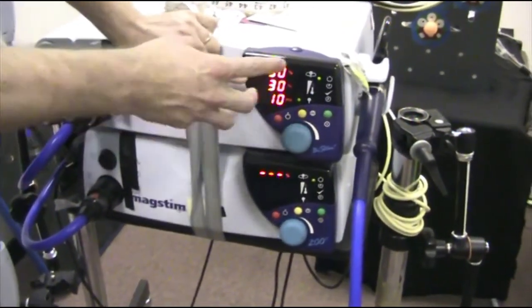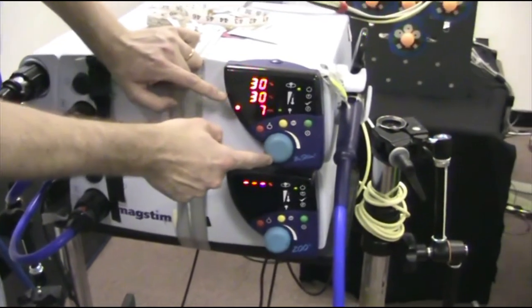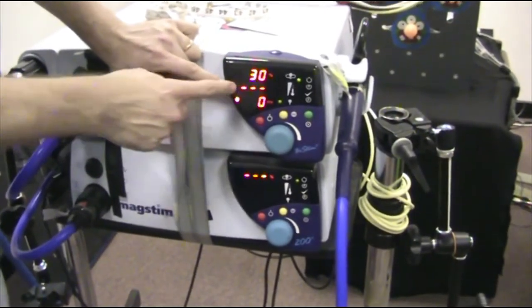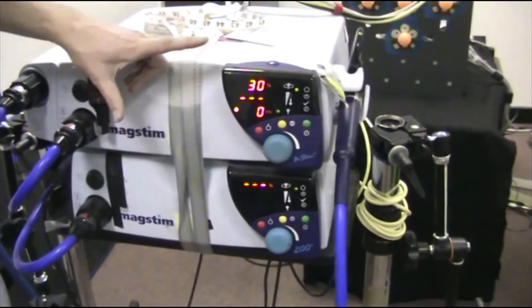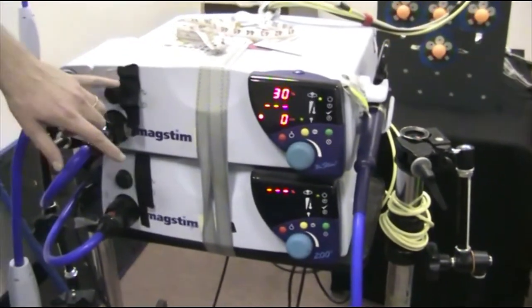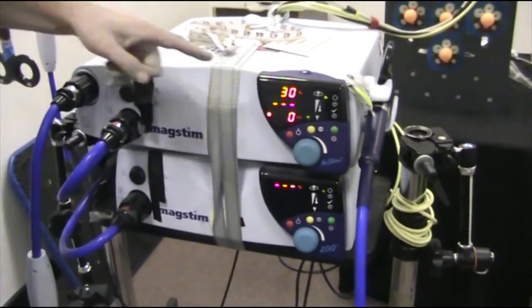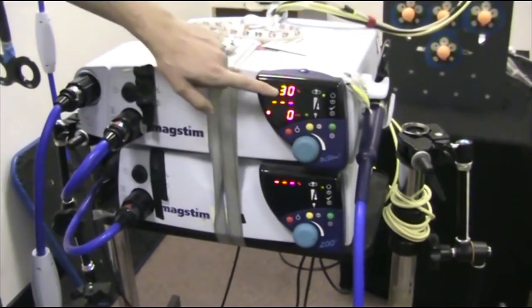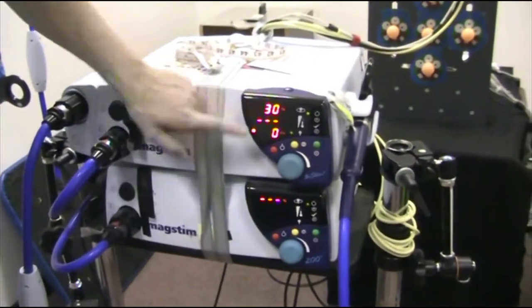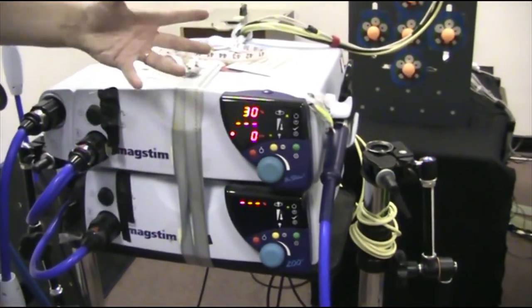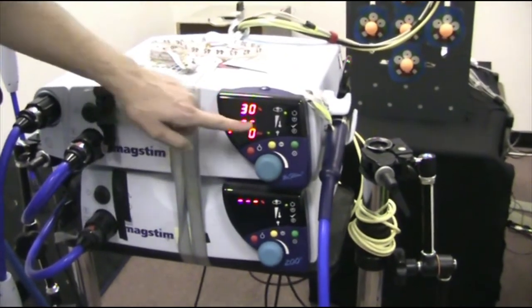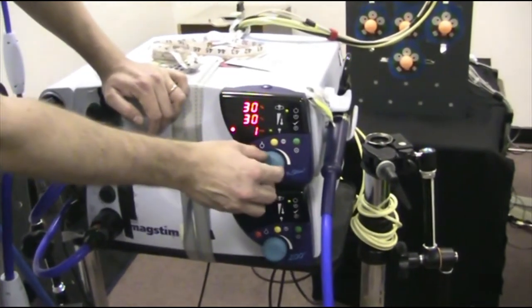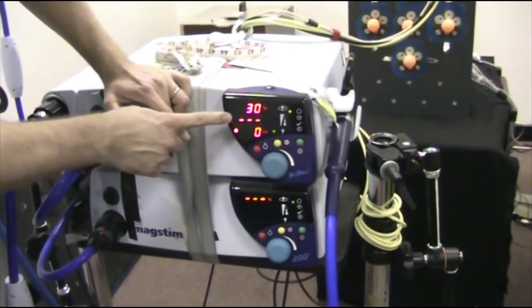One problem, or one feature, that you need to be aware of is that when you have the two machines together, if you reduce that to zero, you then get three lines here. So the time between the two pulses is now zero. And what that means is both machines are firing at the same time. And that means it's not thirty percent anymore. It's more like thirty-five percent. So although it says thirty, it's actually both machines producing thirty. So the overall intensity is higher. So you've got to be really careful that you don't accidentally set this to zero during your experiment because it will change the intensity of the pulse.